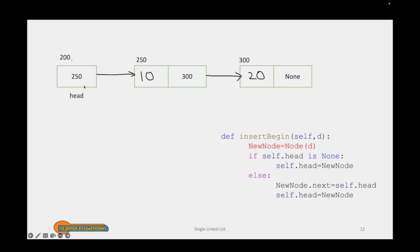Head is a pointer that holds the address of the first node, so we store the value 250 here. If we want to insert a new node at the beginning, head should point to the new node and the new node should point to the first node. These are the two steps.